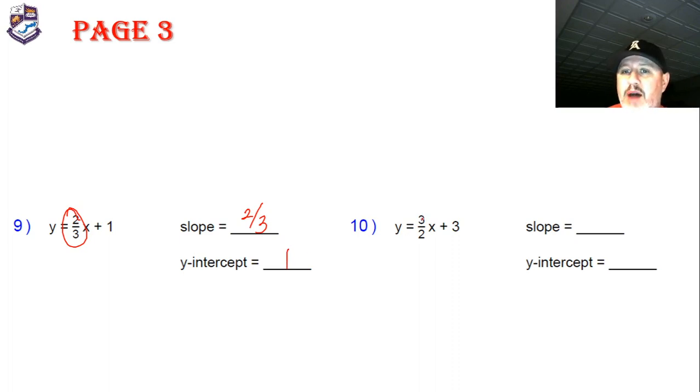And the last problem, the slope is three halves. You might say, why don't we write that as one and a half? We don't usually write that because if we were actually going to graph it, I'd have to rise one and a half and then run one. That's kind of sloppy. We don't like to do that. We just like rising three and running two. It's easier. And the y-intercept is three.